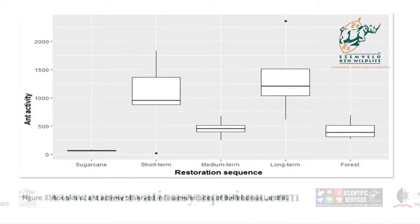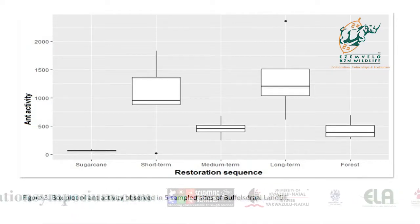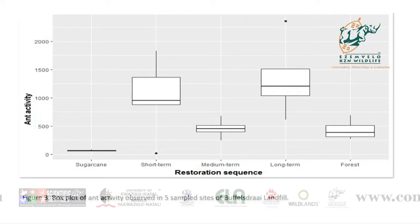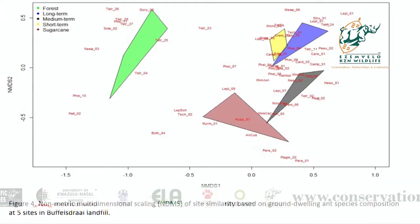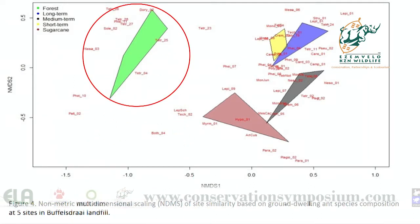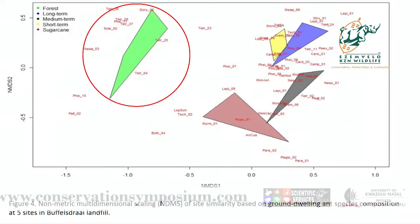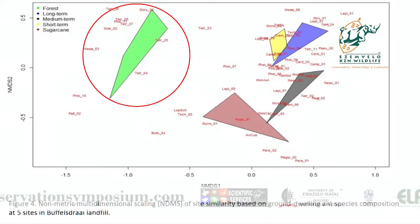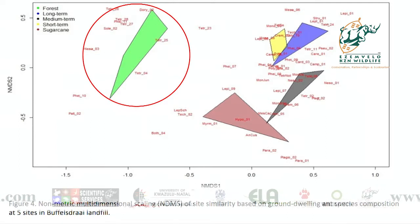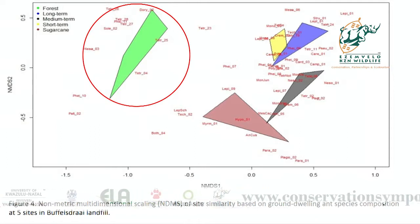For ant activity, which is commonly known as ant abundance, we found that sugarcane is never good for ant species, but as for the trees, abundance was higher in the restored sites as well as the forest site. For the NMDS, we found that the forest site, compared to the other sites, has unique species, which means the forest site is actually the best in accommodating ant species. So forest still remains best in providing habitat for other species, while sugarcane doesn't do well.